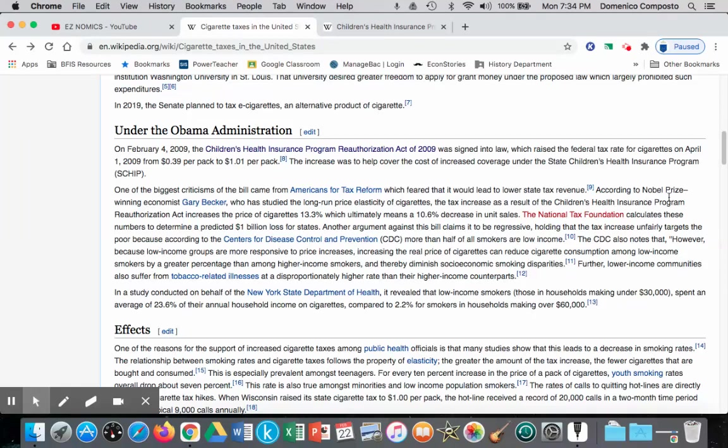So we can see here that according to Nobel Prize-winning economist Gary Becker, who has studied the long-run impacts of price elasticity of cigarettes, he calculated that the increase in price would be, I guess in the long run, about 13.3%, leaving a decrease in the quantity demand by 10.6%. So here we can see that the percent change in price, greater than the percent change in quantity demand in terms of its decrease, thus meaning that the demand curve is inelastic.